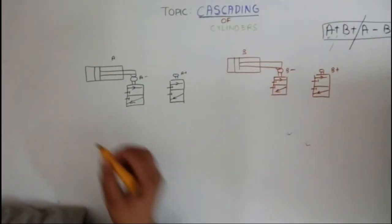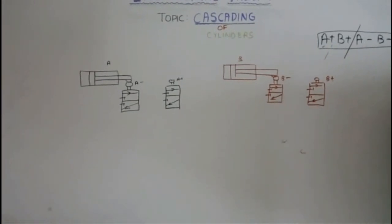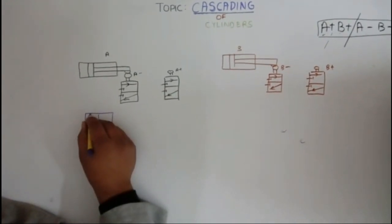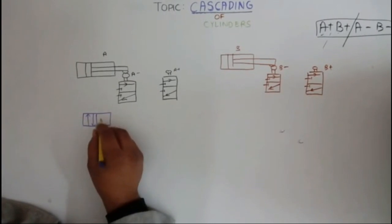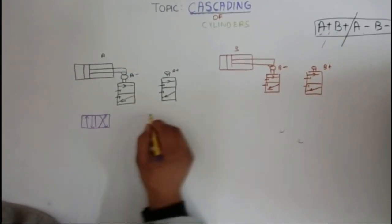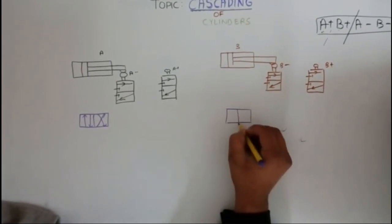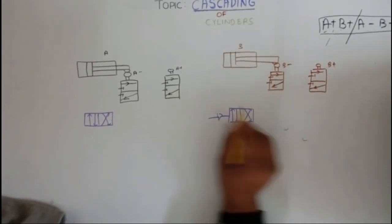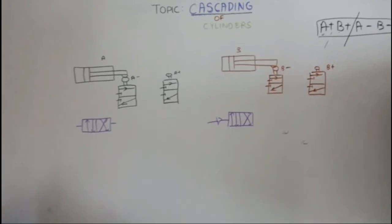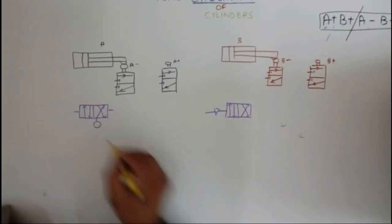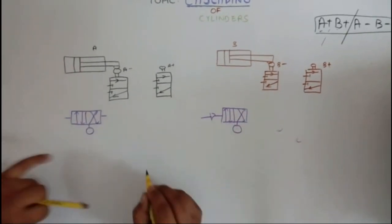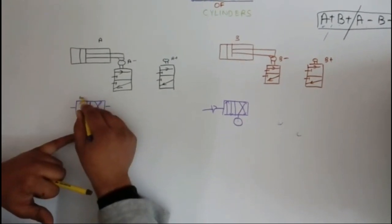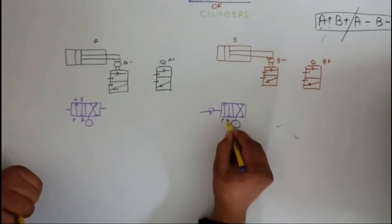We have a 4/2 valve operating the system. Assuming you are clear with the concepts of valves — if not, please refer to my other beginner videos. There is a pressure source, a pressure line, a return line, and working lines for each cylinder.